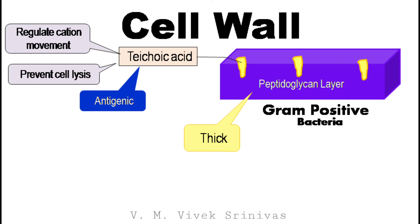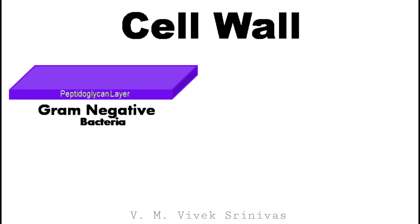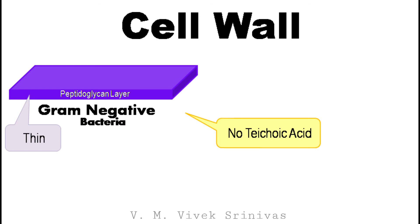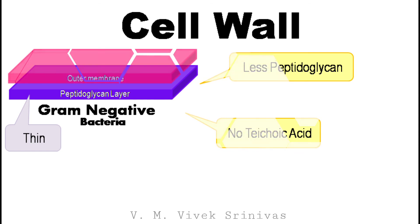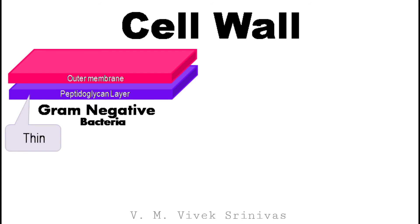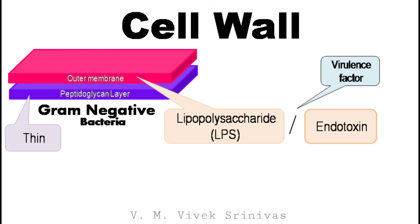And lastly, it provides antigenic character to the bacteria. In contrast, the cell wall of the gram-negative bacteria is a thin structure. Unlike the gram-positive bacteria, this cell wall does not contain teichoic acid, and it is made up of a lesser amount of peptidoglycan. In addition to the peptidoglycan layer, the gram-negative bacteria also contain another layer called the outer membrane. This outer membrane contains lipopolysaccharide, the LPS. This lipopolysaccharide is also referred to as the endotoxin, and is one of the important virulence factors of the gram-negative bacteria.